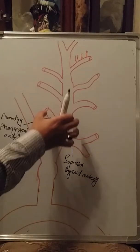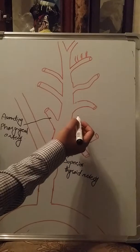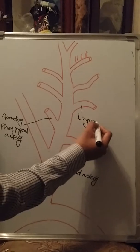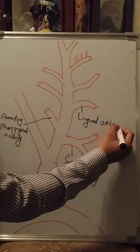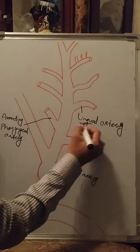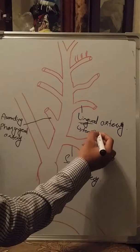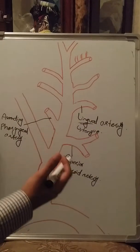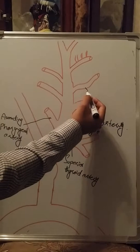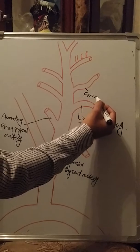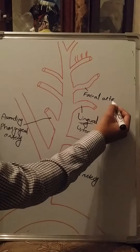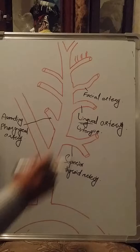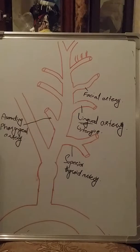Moving upward, another branch originating from the external carotid artery is the lingual artery. As the name suggests, 'lingual' means tongue, so this artery provides blood supply to the tongue region. Another branch is the facial artery, which provides blood supply to the skin and buccal region of the face — essentially the entire facial region, as the name suggests.